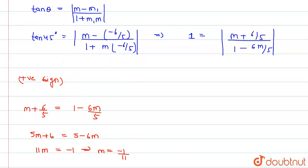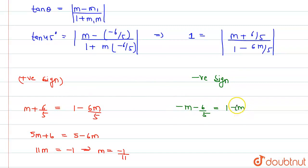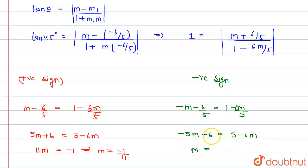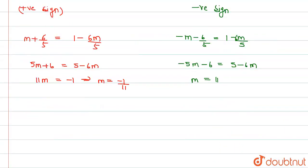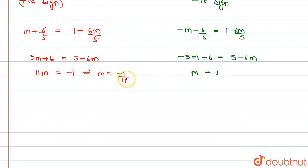Now taking the negative sign: -(m + 6/5) / (1 - 6m/5) = 1, which gives -5m - 6 = 5 - 6m. Simplifying: m = 11. We can clearly see that the product of both slopes (-1/11 × 11 = -1), which means these two lines are perpendicular.